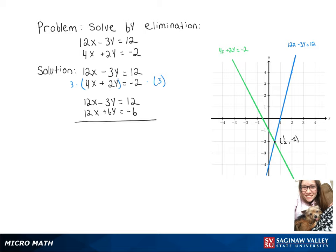Now we can subtract our second equation from our first equation, which cancels out our x's and leaves us with negative 9y equals 18.